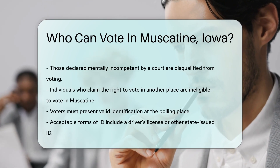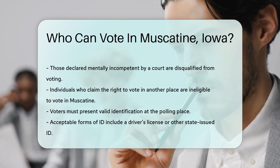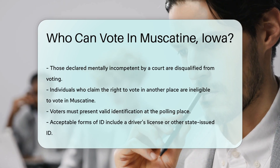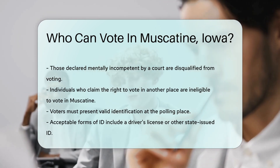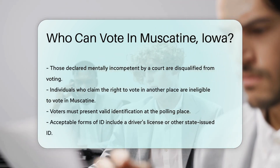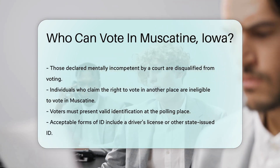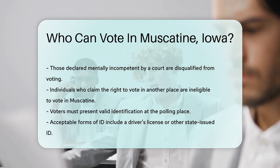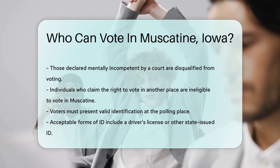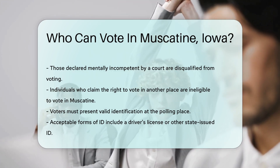And lastly, voters must present valid identification at the polling place. This confirms their identity and eligibility to vote in Muscatine. Acceptable forms of ID include a driver's license or other state-issued ID.